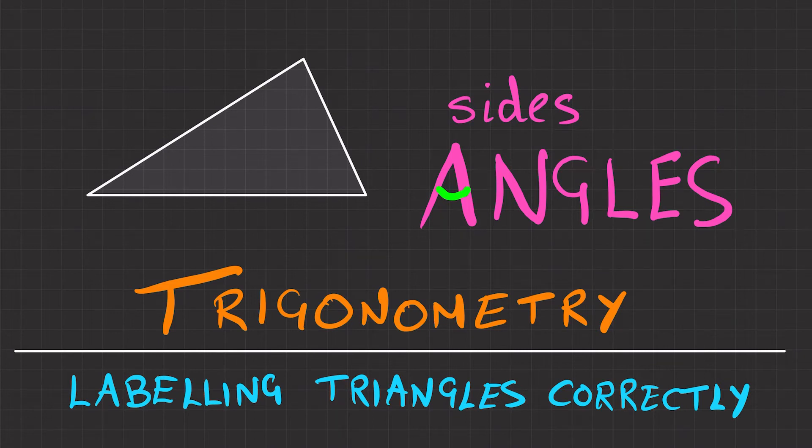Let's label triangles correctly for use with the sine and cosine rule. Now you'll notice here we've got sides in lowercase letters and angles in uppercase letters. That's because sides, you use lowercase letters to represent them, and angles you use uppercase letters to represent them.